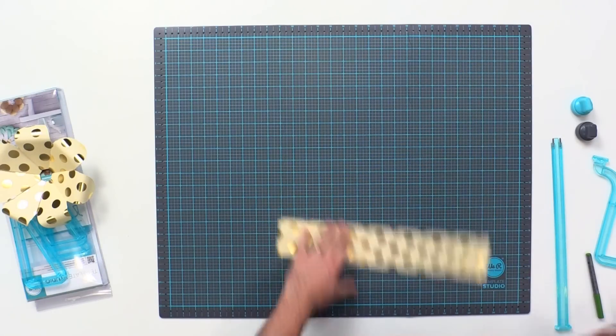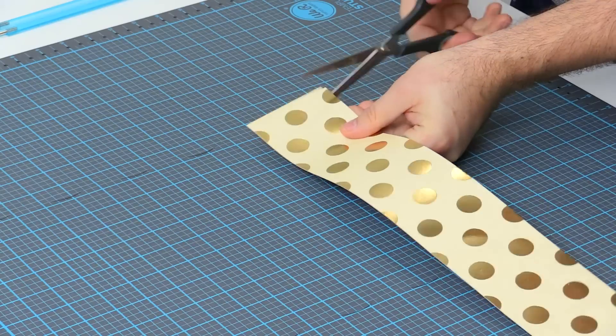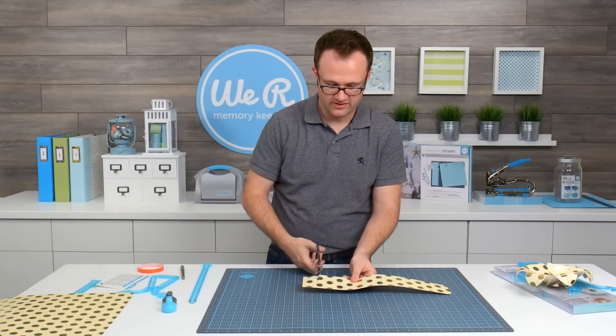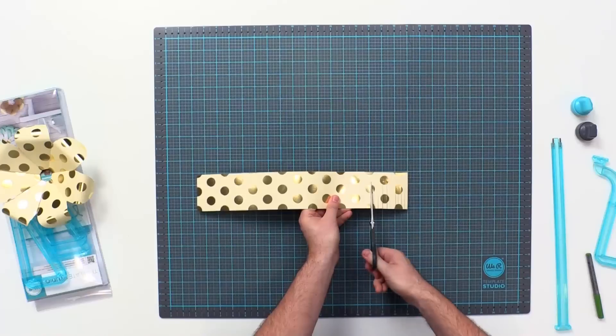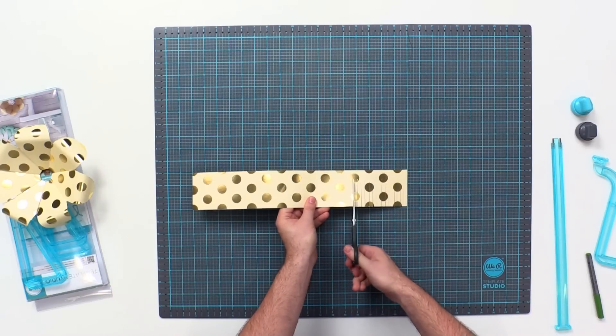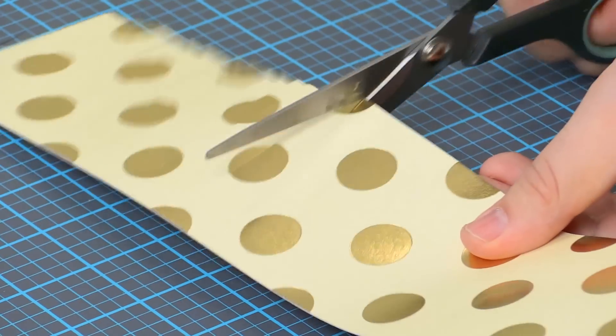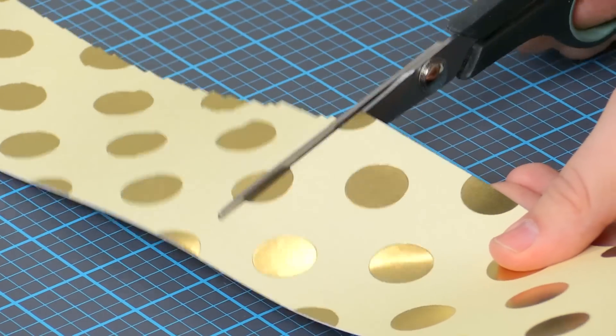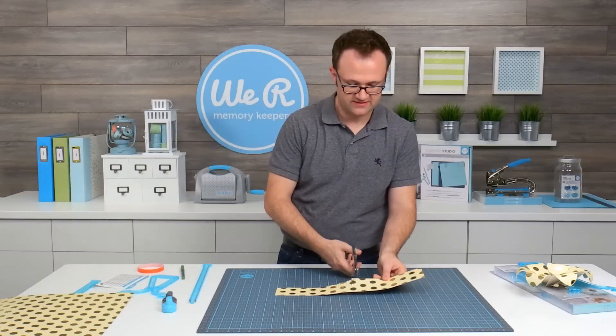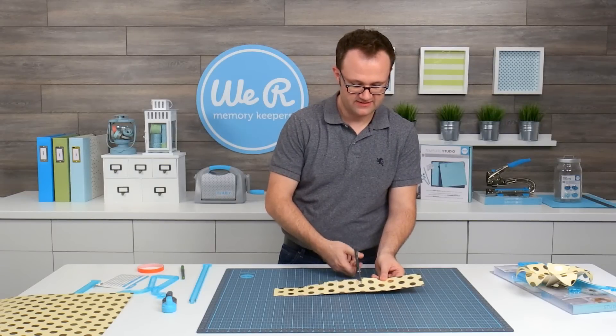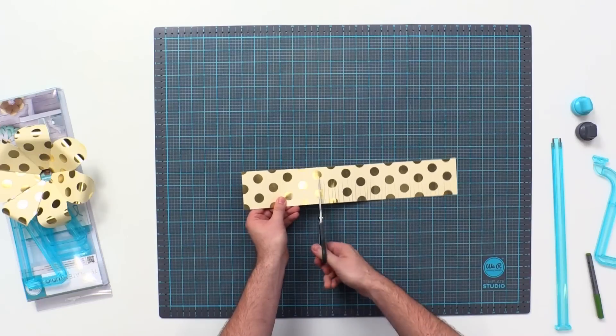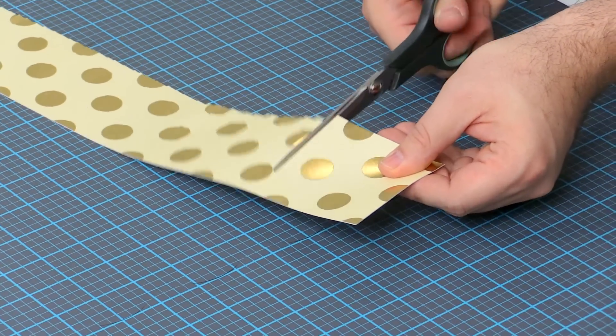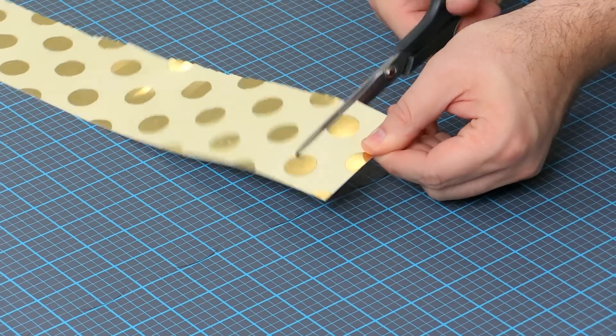And then using some scissors, I'm just going to come along and I'm going to cut just along here for some fringe. You just want to make sure that you're not cutting all the way through this. You're just cutting down, fringing this as you go along. It really doesn't matter how far apart or how close together it is. It's just going to create a nice fringy center to your flower. The longer the strip is, the bigger the little puff ball in the middle is going to be.